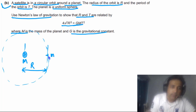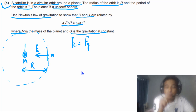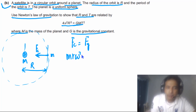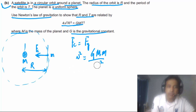As the satellite orbits in a circle, the centripetal force is provided by the gravitational force. So FC equals the gravitational force: mRω² = GMm/R². We can replace the small r with capital R because the orbital radius is given as capital R.